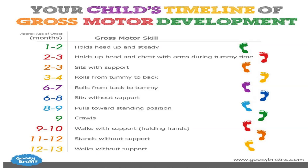Motor development varies by age. From around six months to one year, a child can properly hold objects. From two to three years, growth occurs in the chest and arms, and a child begins to crawl and eventually stand.